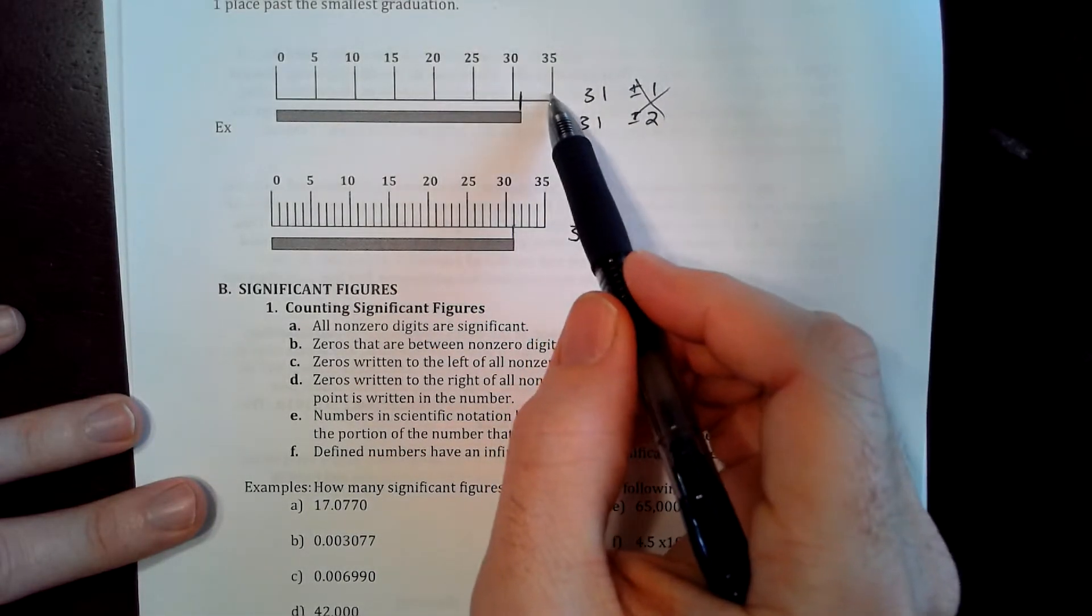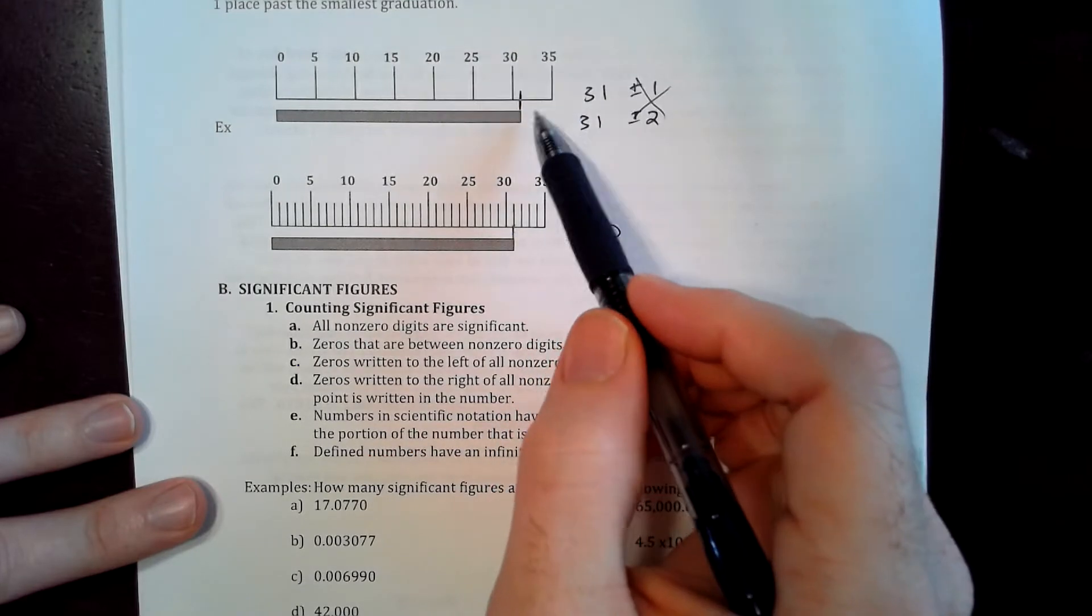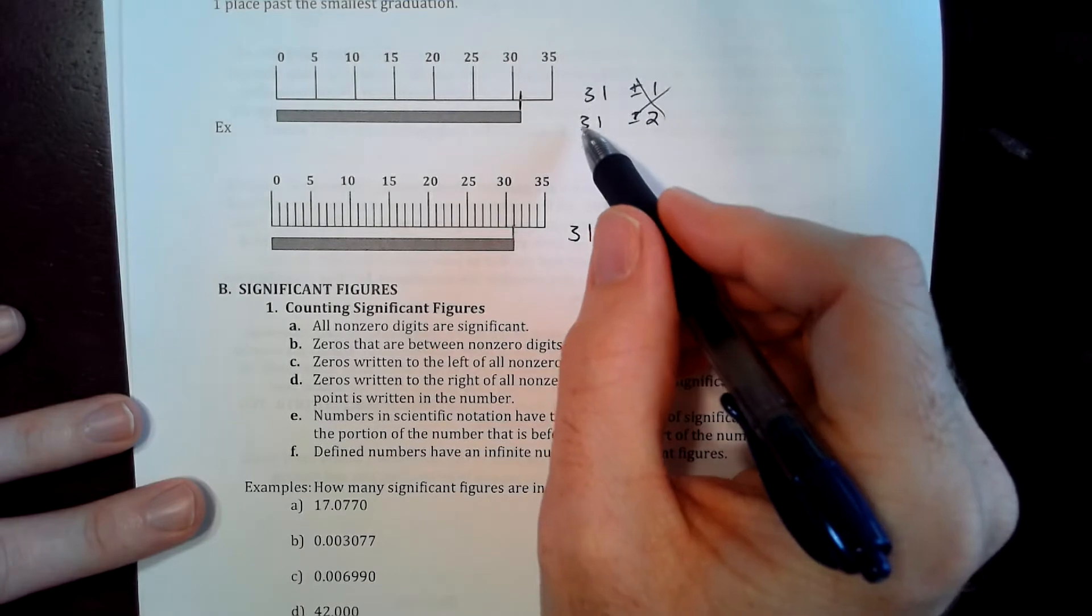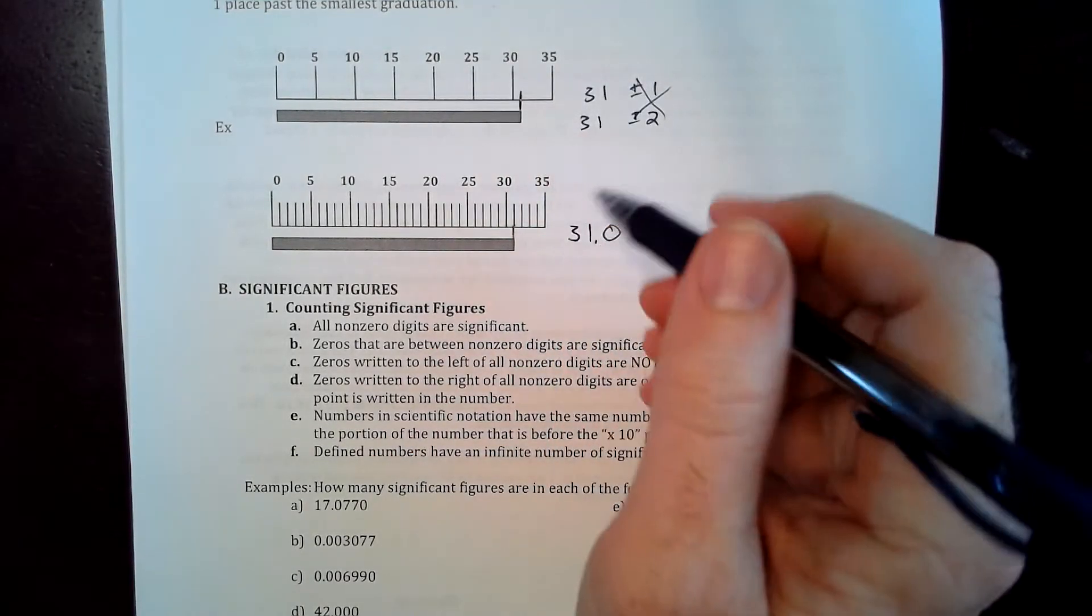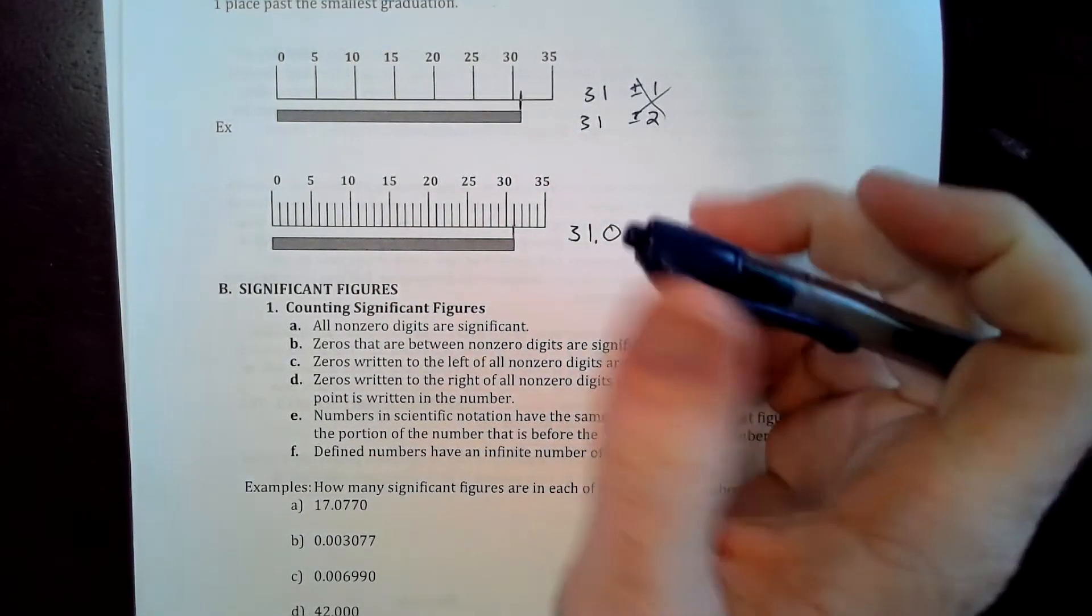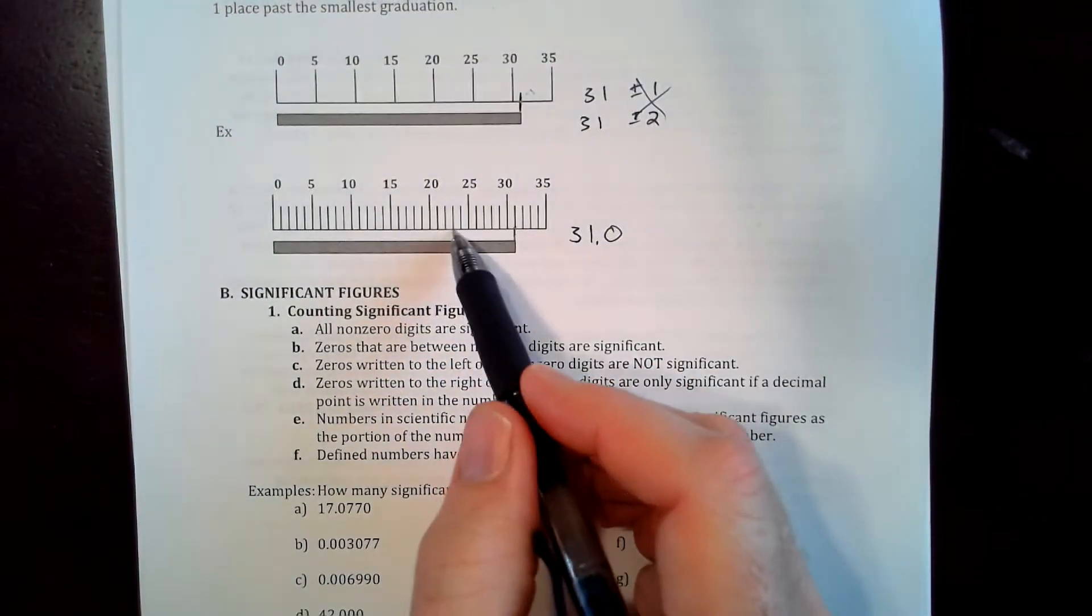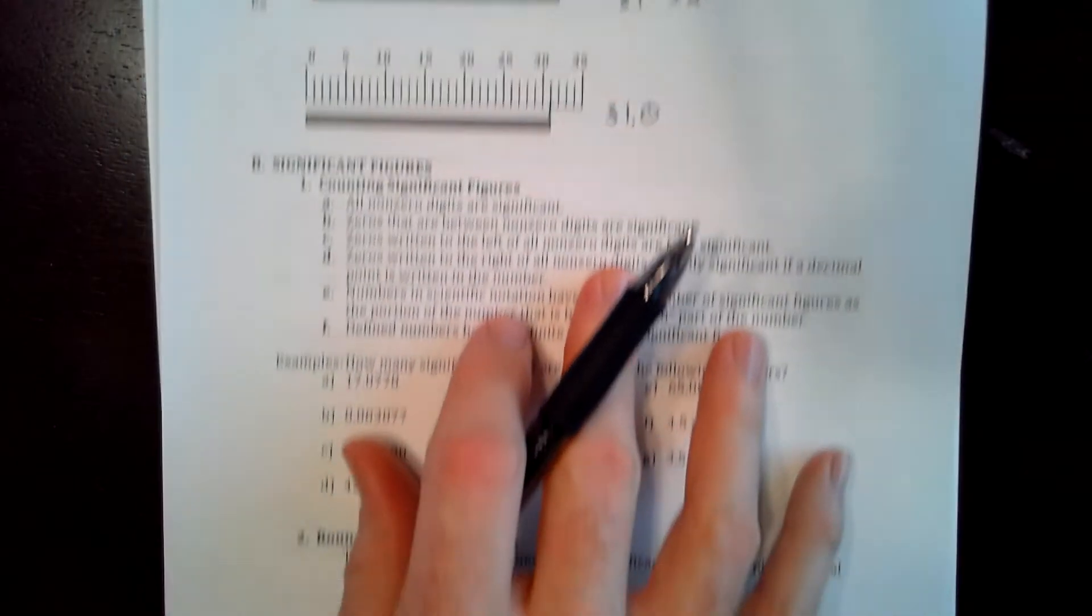Each increment here was worth five, so we're going to give one digit past that five, which is going to be, that's probably the best approximation. This one's a little tricky. They wouldn't ask you something like that. This will show up on the test, some kind of thing like that.